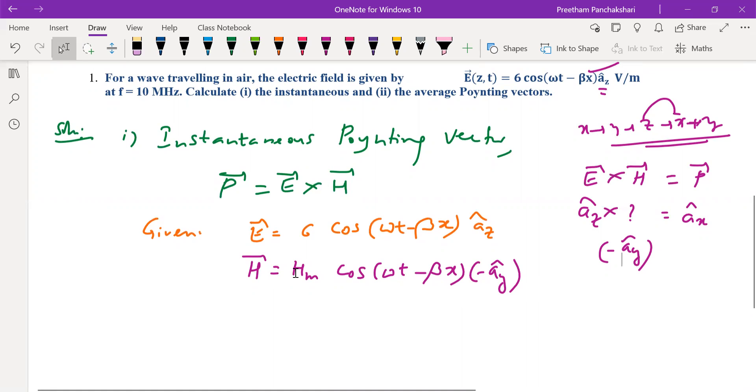Now we have to find H_m. This H_m can be found from the relation E_m by η. η is the intrinsic impedance of the medium, that is air here. So η_0 is 377. E_m is 6.